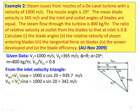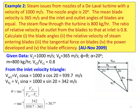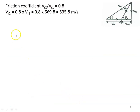From the inlet velocity triangle: VW1 equals V1 cos alpha, which is 1000 into cos 20, equal to 939.7 meters per second. VF1 equals V1 sin alpha, which is 1000 into sin 20, equal to 342 meters per second. Theta equals tan inverse of 342 divided by (939.7 minus 365), equal to 30.7 degrees. VR1 equals VF1 divided by sin theta, which is 342 divided by sin 30.7, equal to 669.8 meters per second.